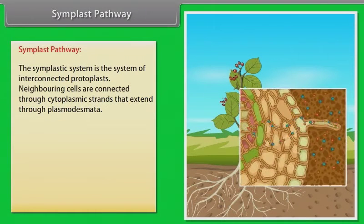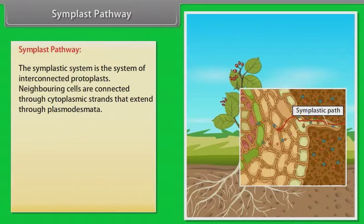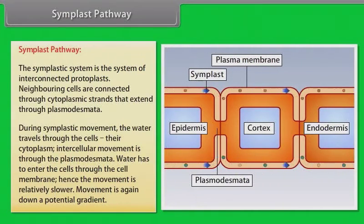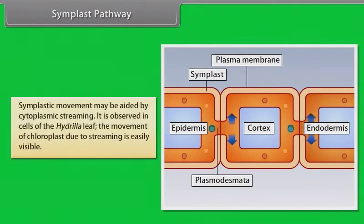Symplast pathway. The other pathway is symplast pathway. The symplastic system is the system of interconnected protoplasts. Neighboring cells are connected through cytoplasmic strands that extend through plasmodesmata. During symplastic movement, the water travels through the cells, their cytoplasm. Intercellular movement is through the plasmodesmata. Water has to enter the cells through the cell membrane. Hence, the movement is relatively slower. Movement is again down a potential gradient. Symplastic movement may be aided by cytoplasmic streaming. Cytoplasmic streaming is observed in cells of the hydrilla leaf. The movement of chloroplast due to streaming is easily visible.